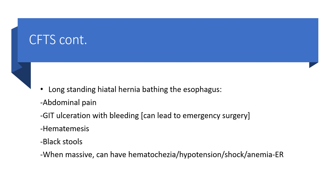When the hernia is long-standing and the esophagus is being continuously bathed by the stomach's contents, we can have abdominal pain and gastric ulceration with probable bleeding. When the bleeding is serious, it can lead to acute emergency surgery, hematemesis from bleeding, black stools from bleeding, and massive bleeding will lead to hematochezia, hypotension, hypovolemic shock, and anemia — on account of which the individual will be taken to the emergency room and then to the surgery department for emergency surgery.